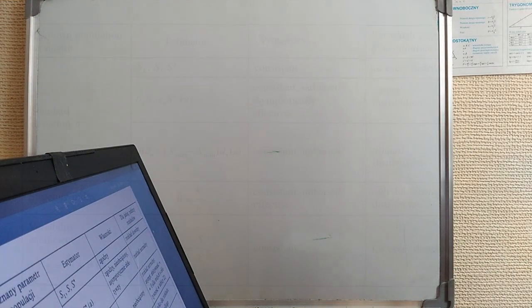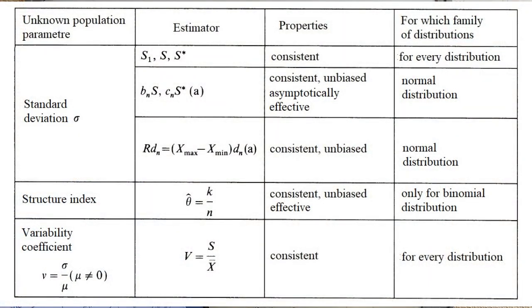Next, how do we estimate the standard deviation? We can take s1, s and s star, meaning just the square root of the previous one, and we obtain just consistent estimation for any possible distribution. Now, if we take bn s or cn s star, then we obtain consistent and unbiased and asymptotically effective estimator. But of course, we have to adjust the constants bn and cn to it. And this refers only to normal distribution. We can also take the slope Rd n, which is maximum minus minimum value times dn of a, some sequence of dns. And this is consistent and unbiased.